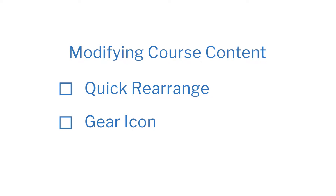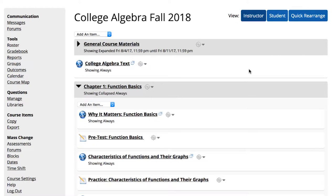When you're designing a course, Quick Rearrange is a simple tool for making wider-scale changes to your course, like reordering or deleting entire topics. From your course homepage, on the top right, there is a button for Quick Rearrange.